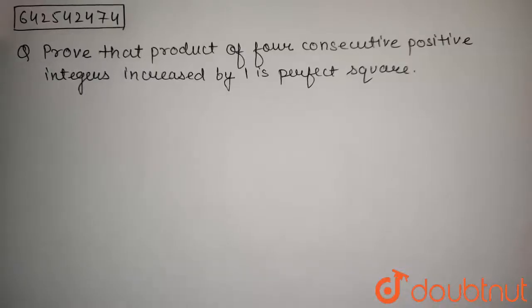The question is, prove that product of four consecutive positive integers increased by one is perfect square.